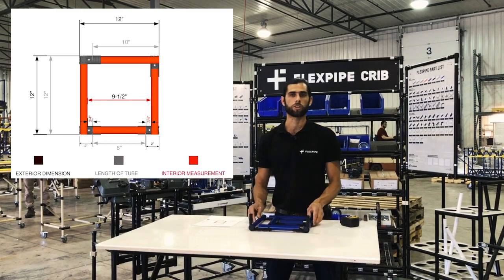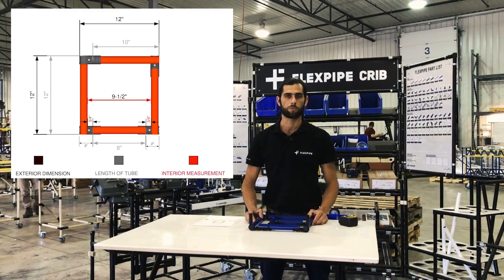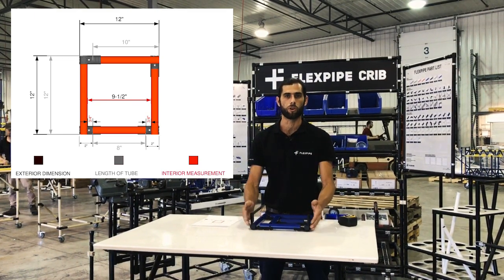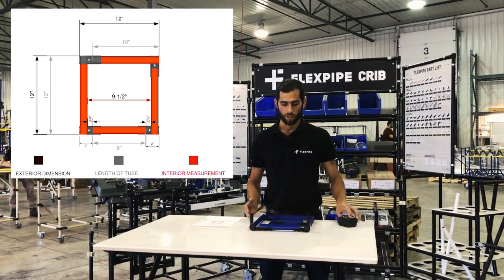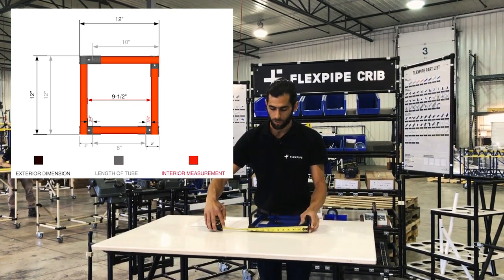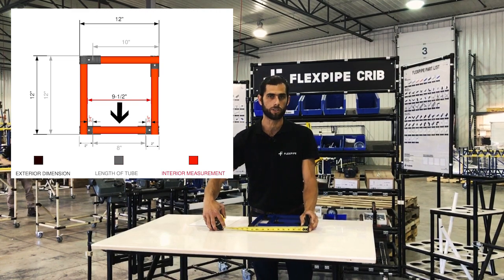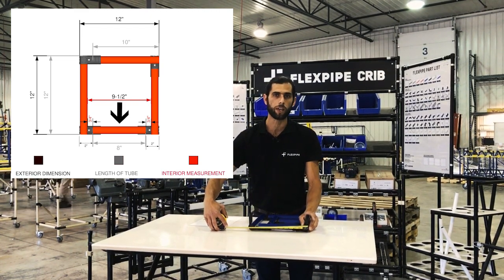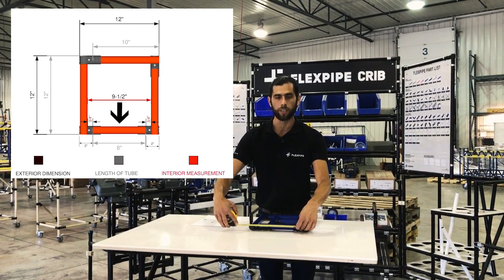Basically, we want to determine what lengths to cut our pipes. This is determined by understanding your overall dimensions. For instance, today we're looking at an overall external dimension of 12 inches. At 12 inches, our pipe length is going to be 8 inches.